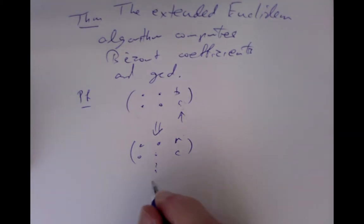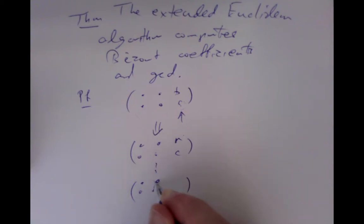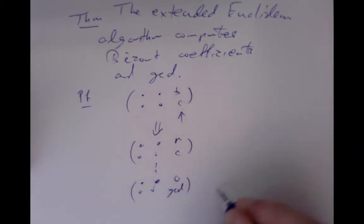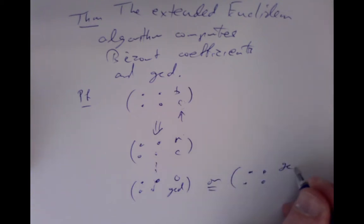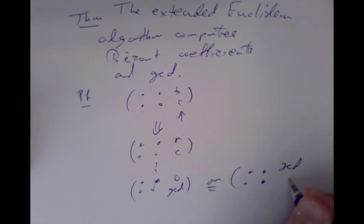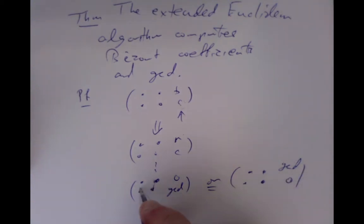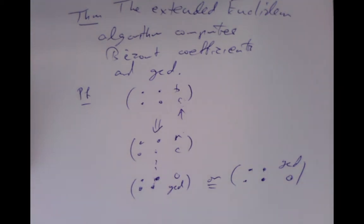As a consequence, after a number of steps, we must eventually have a zero and a GCD, or a GCD and a zero in the last column. We don't know what the first four entries are going to be, but we'll worry about them next.